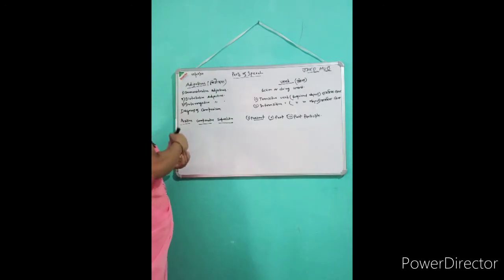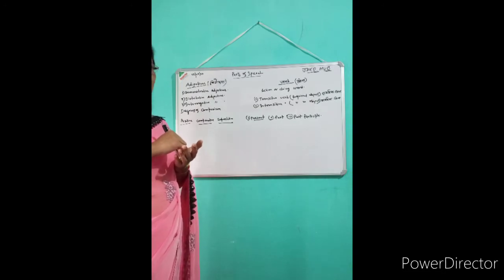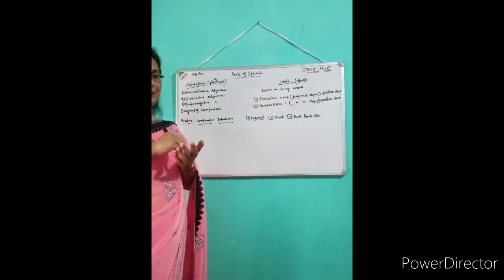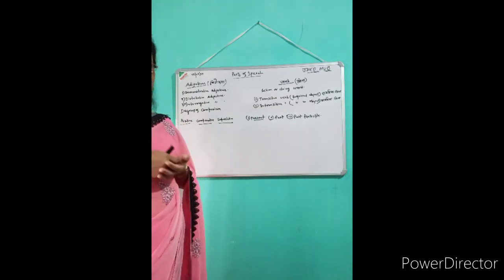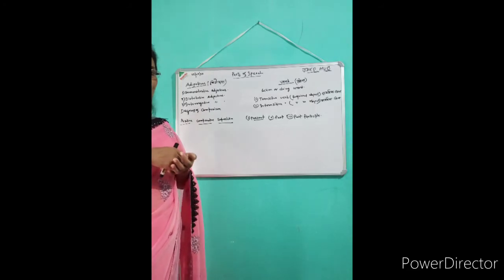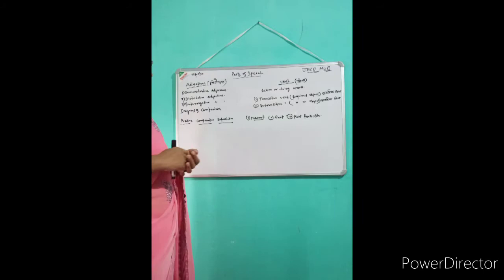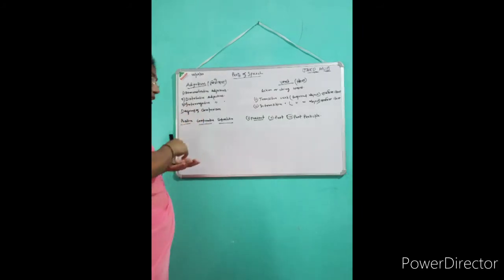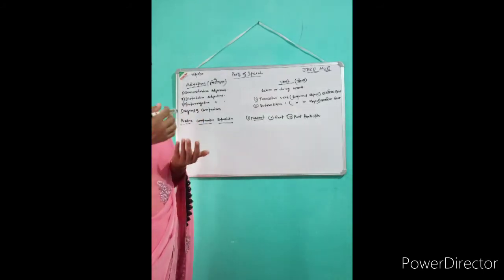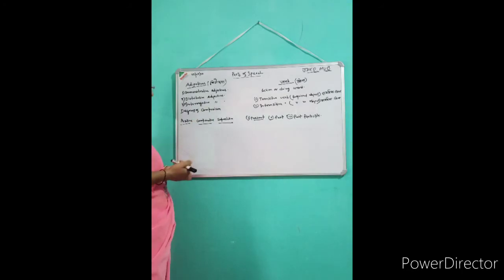And the next one is interrogative adjective — प्रश्नवाचक. What color is her hair? Which train will you catch? Which, what, where, why, when — these are interrogative adjectives.